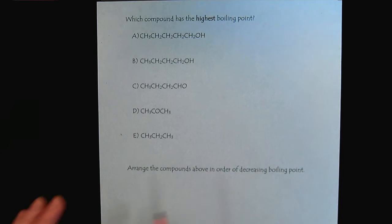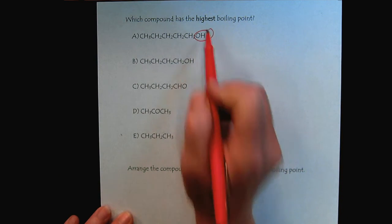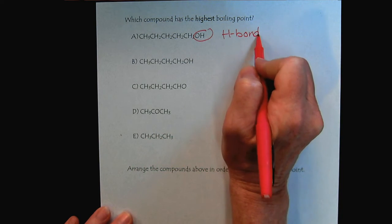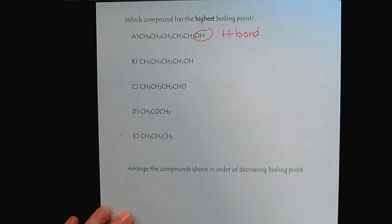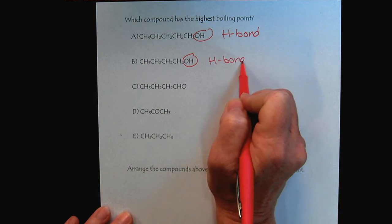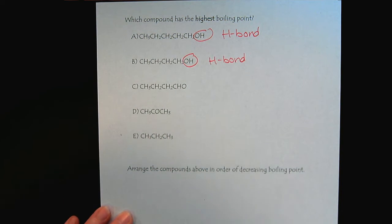So we look here, and as soon as we see the alcohol group, we recognize that as an H-bonder. And we look here, and we go, oh wait, there's two H-bonders. So we have a tie.